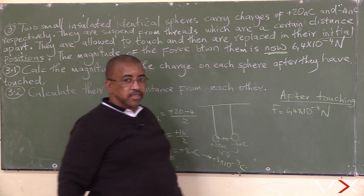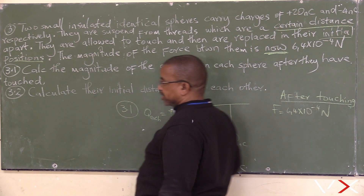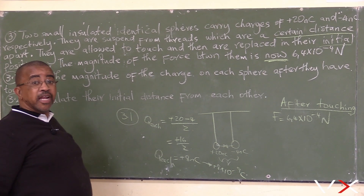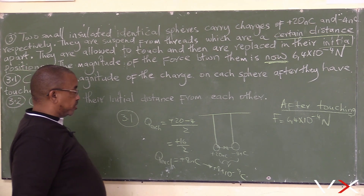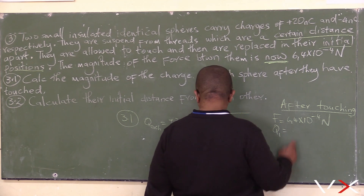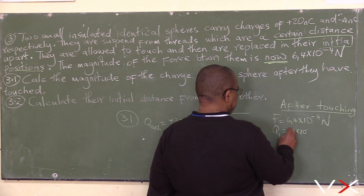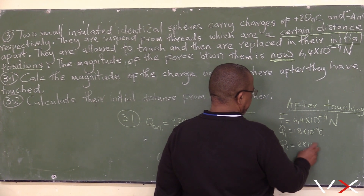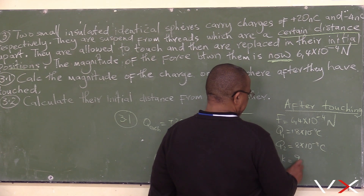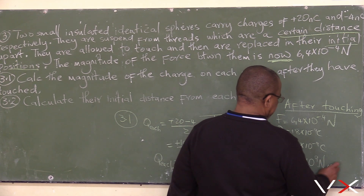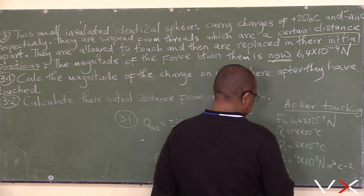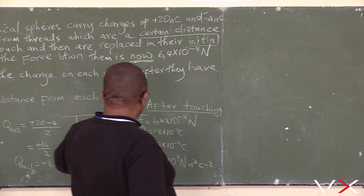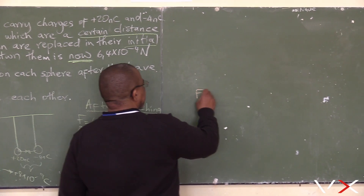They were at a certain distance — the same initial position. Charge q1 equals 8 times 10 to the power minus 9 coulombs and q2 equals 8 times 10 to the power minus 9 coulombs. k is 9 times 10 to the power 9 newton metres squared per coulomb squared. We need to calculate the distance r.